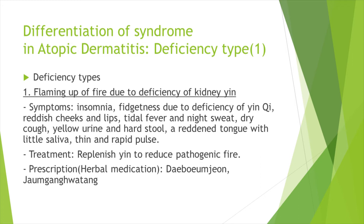There are also deficiency types, where a lack of genuine energy causes symptoms. First, flaming of fire due to deficiency of kidney yin: symptoms are insomnia, reddish cheeks and lips, tidal fever and night sweats, dry cough, a reddened tongue with little saliva, and thin and rapid pulse. Treatment is to replenish yin to reduce pathogenic fire, and jaeumgangotang is prescribed.